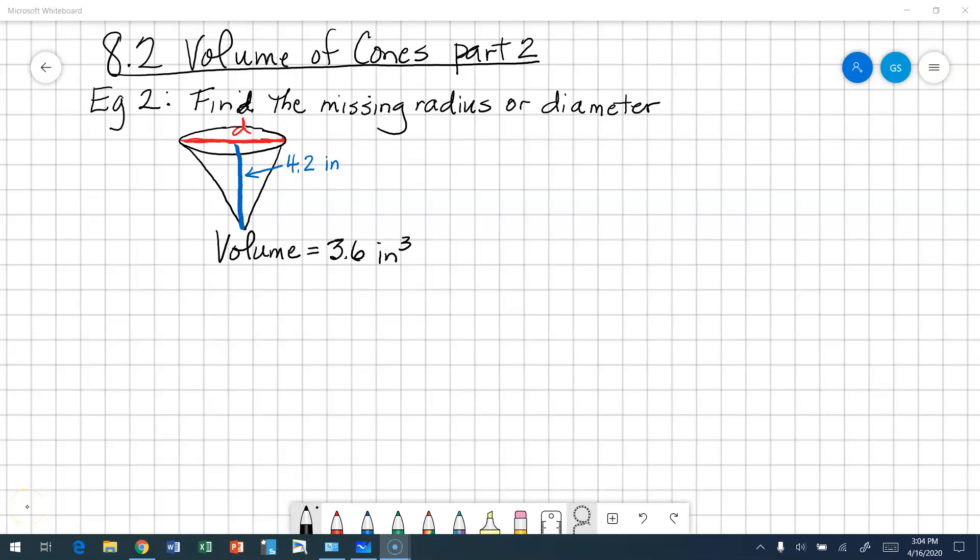Okay, up until now we've been solving for volume. Well, what happens if we have one of the dimensions missing? In this case, we have a missing radius or diameter. The picture is saying that we want to know the diameter. So we have to figure out the radius first, right? Because diameter is not in our formula.